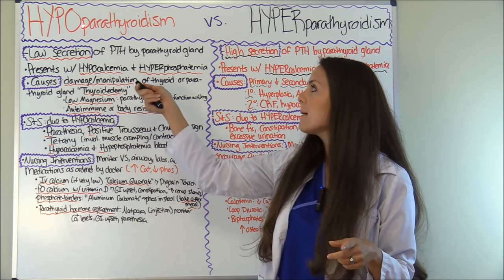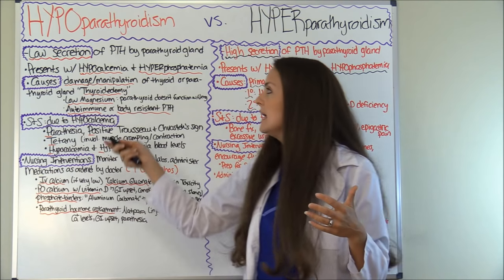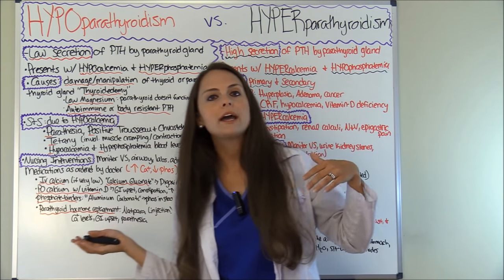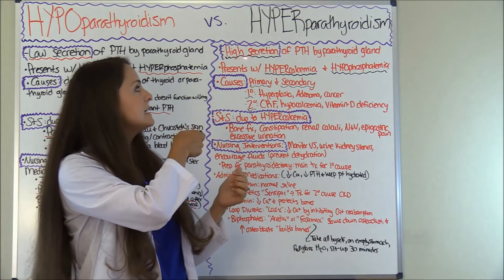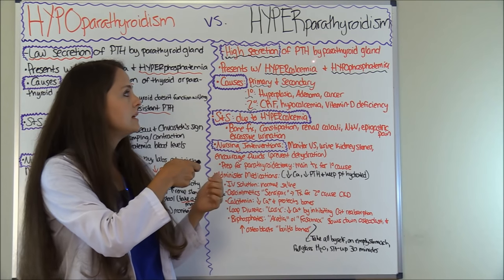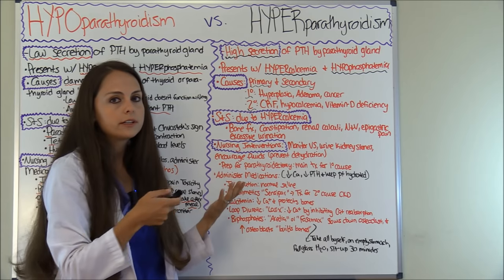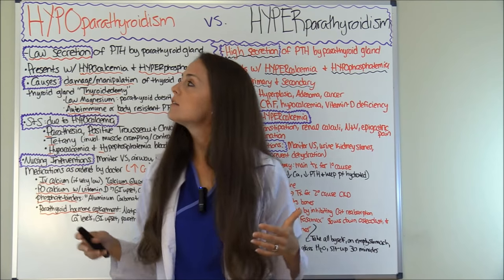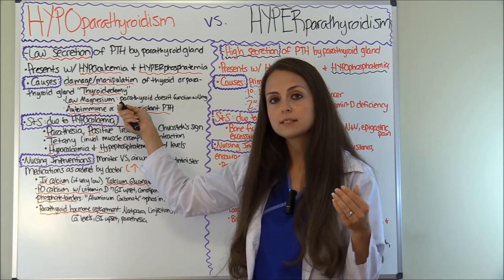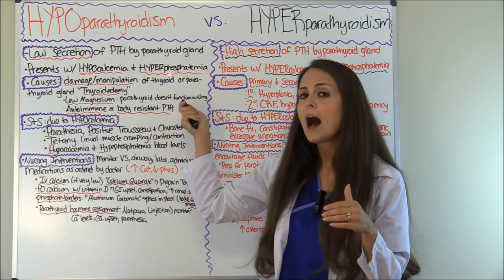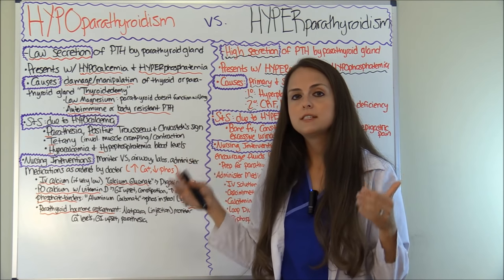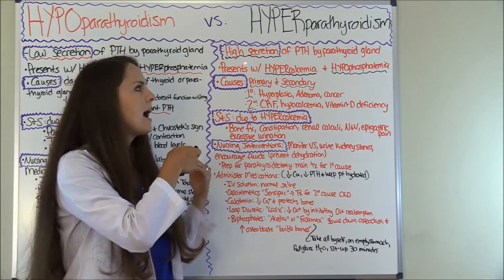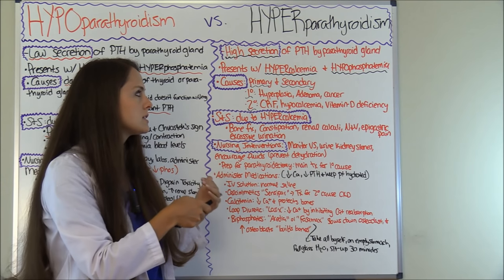First let's talk about hypoparathyroidism. What is it? It is a low secretion of PTH — parathyroid hormone — by the parathyroid gland. What is hyperparathyroidism? It is a high secretion of PTH by the parathyroid gland. So they're pretty much the opposite of each other. In hypoparathyroidism you're going to have hypocalcemia — a low calcium level — and a high phosphate level, hyperphosphatemia. On the flip side in hyperparathyroidism, you're going to have a high calcium level and a low phosphate level.